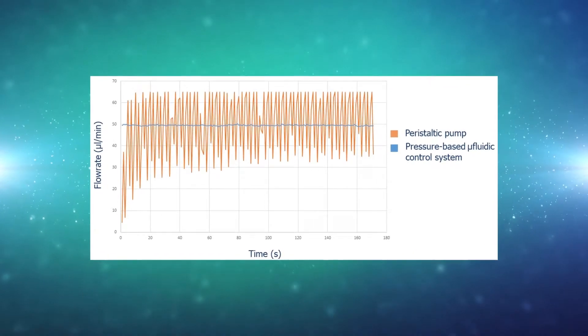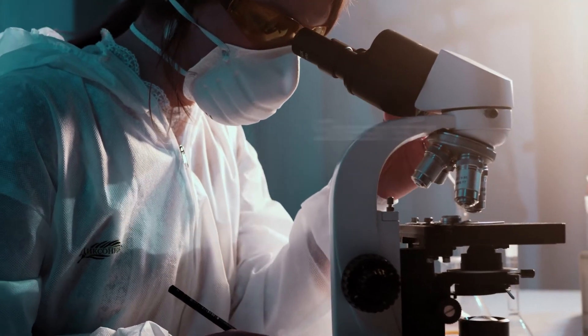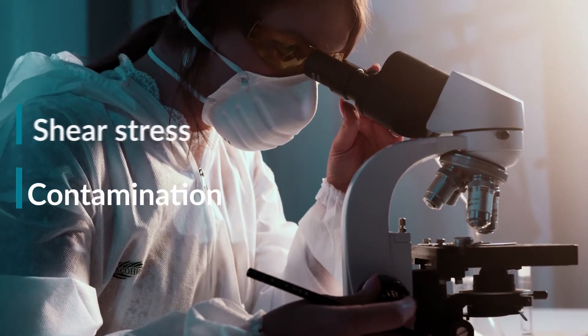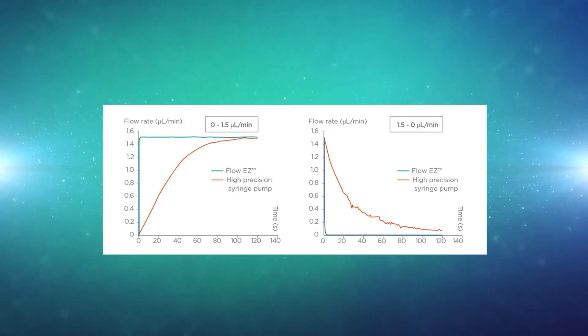Nevertheless, the stability of peristaltic pumps can be quite bad due to internal friction and the functioning principle itself. Other issues such as high shear stress and contamination of the fluid can be a problem, in particular for biological experiments. Concerning syringe pumps, the main drawbacks are the lack of stability and low responsiveness.